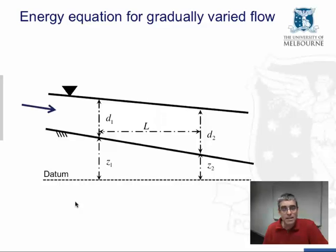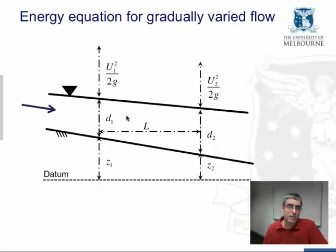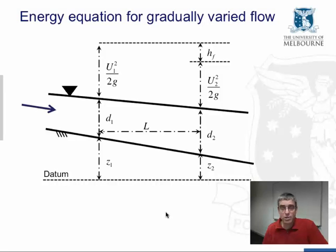Next, we'll look at the kinetic energy at the two cross-sections. So this, in terms of head, is given by the velocity squared divided by 2 times gravitational acceleration, so u1 squared on 2g and u2 squared on 2g. And if we sum these energy terms at the two cross-sections, we see they're different, and the reduction in the total between cross-section 1 and cross-section 2, i.e. the difference in the sum of these energy terms is the head loss between the two cross-sections, and we'll denote that by hf.